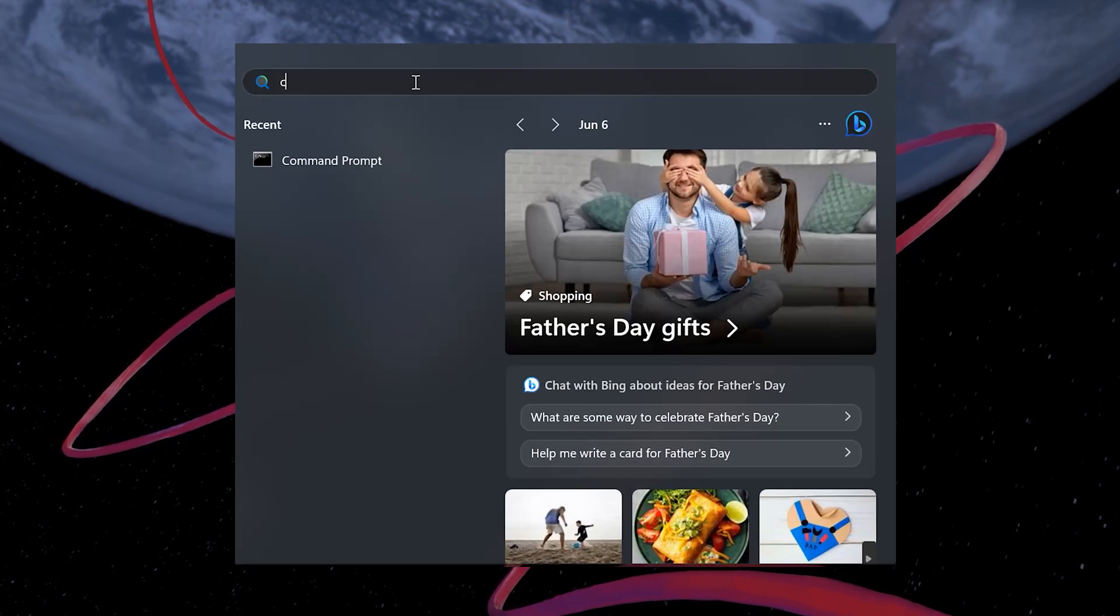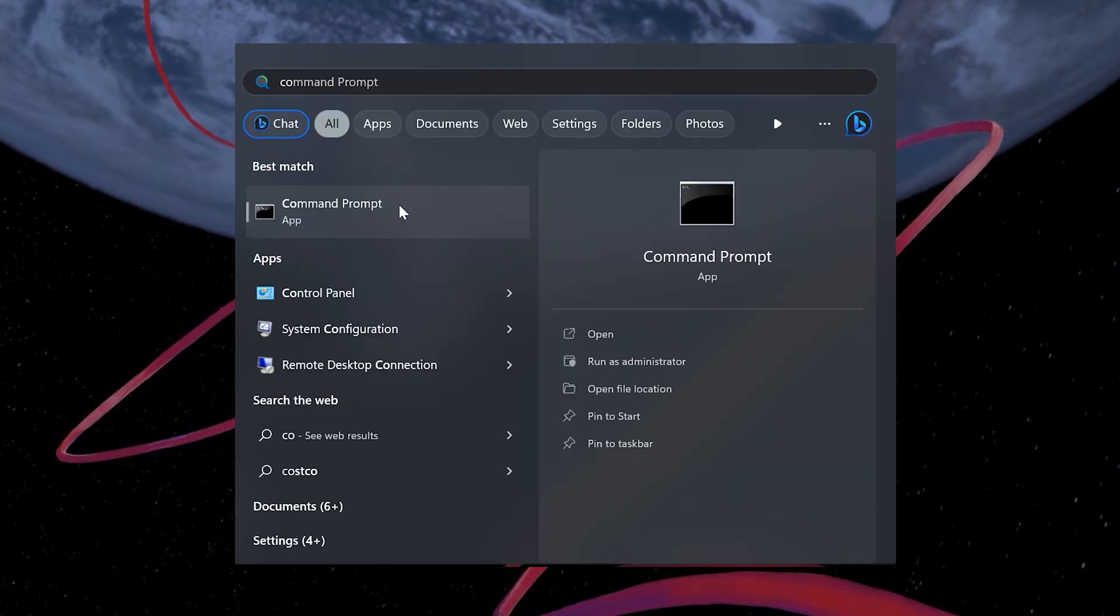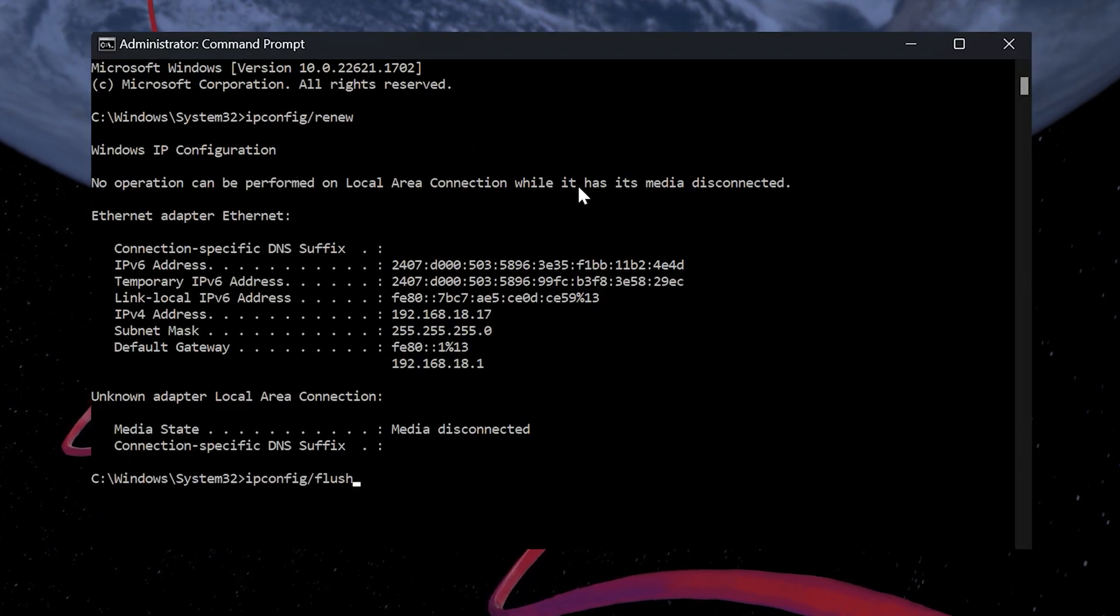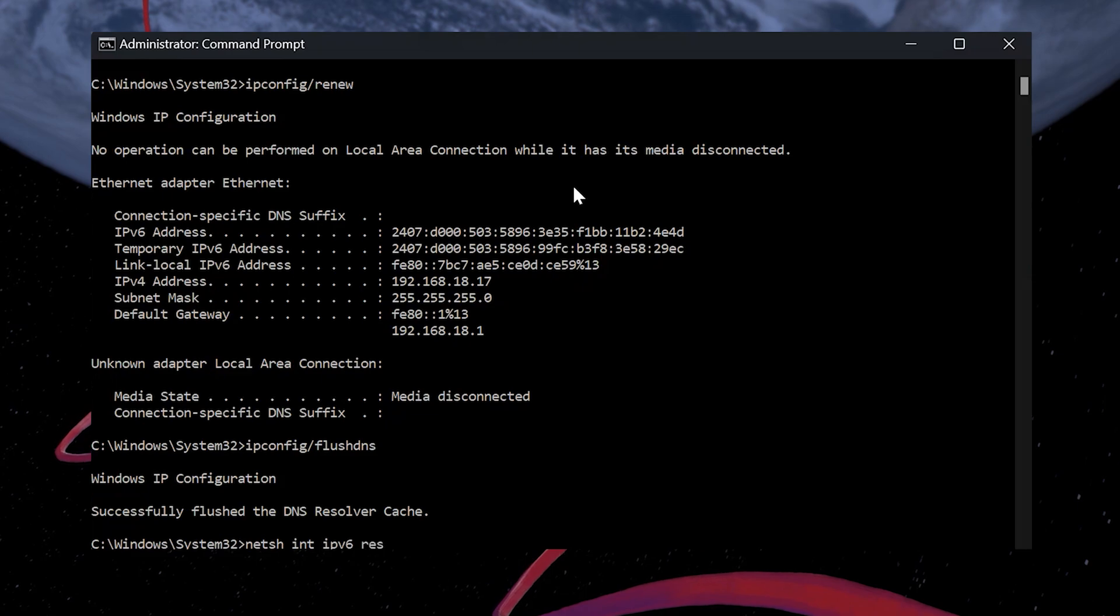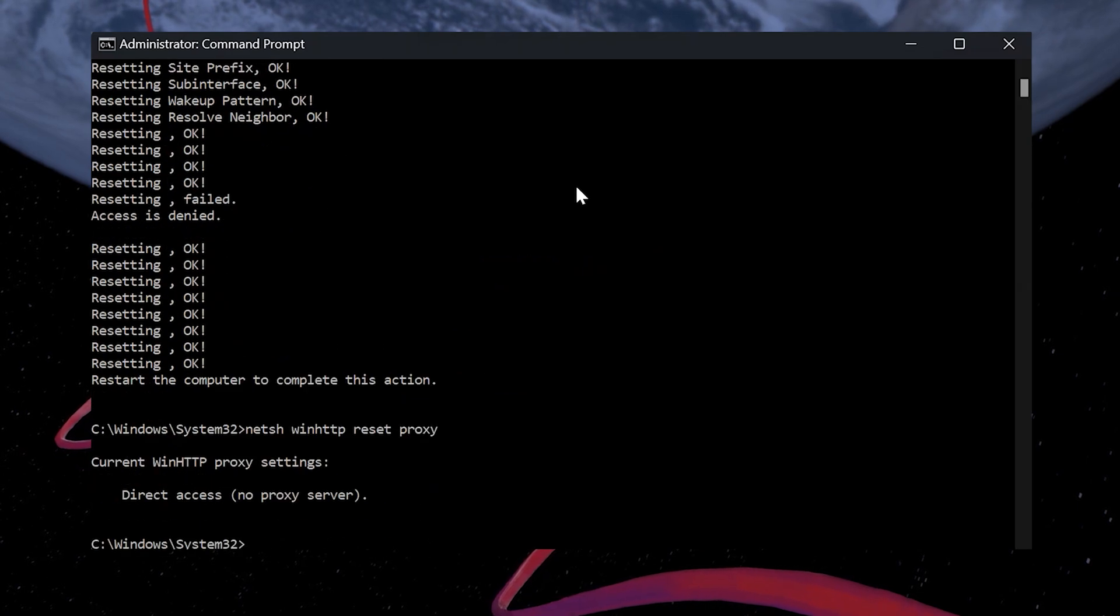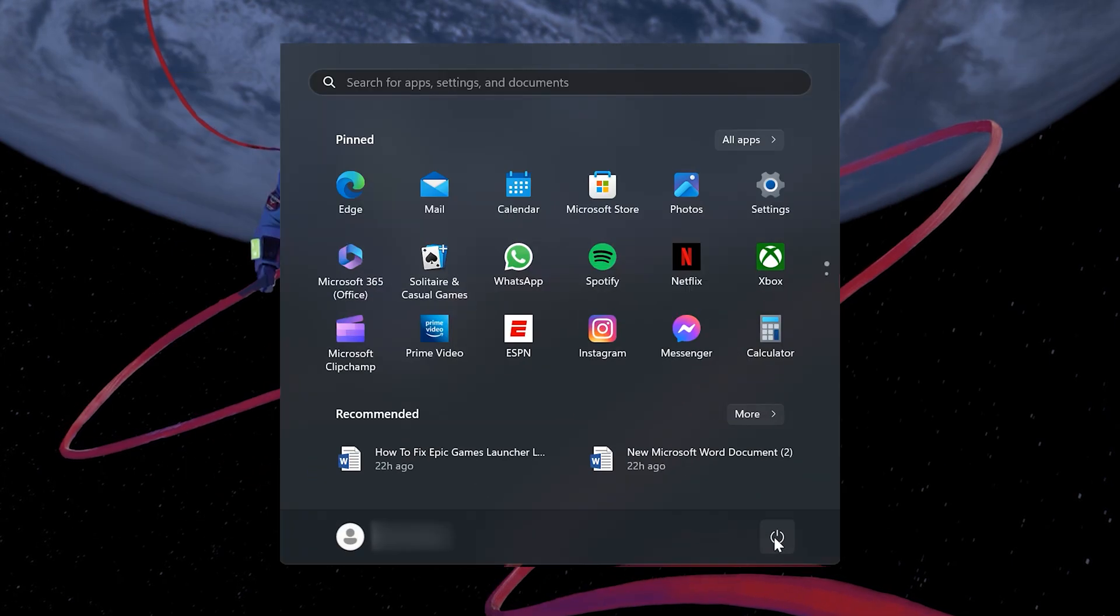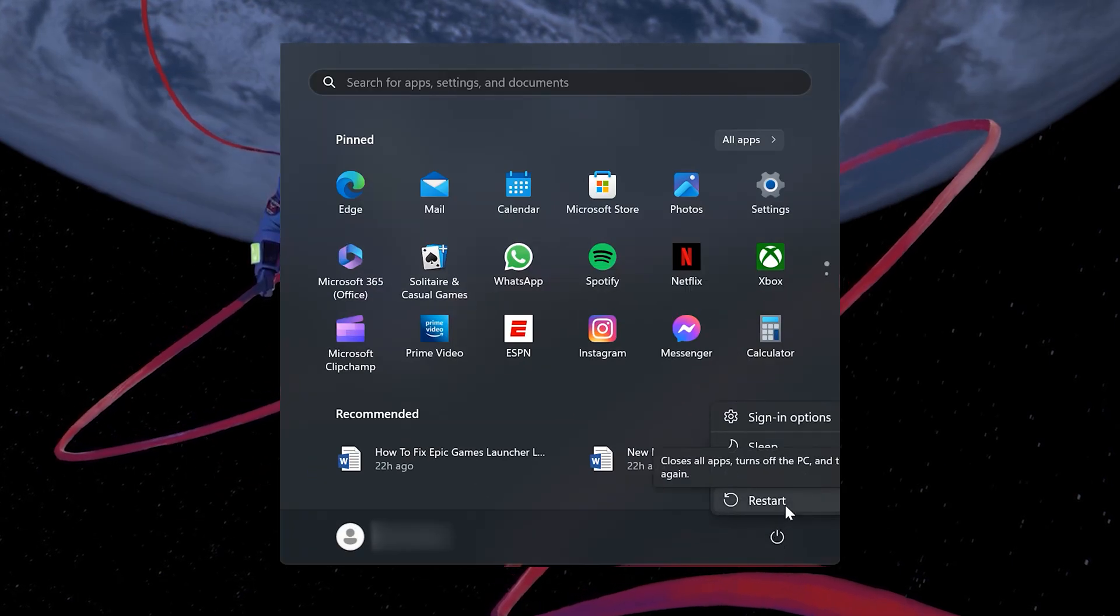Lastly, type Command Prompt in the Start Menu Search and run it as an administrator. Insert each of these commands one at a time into the Command Prompt window and hit Enter. You can find them in the video description. After entering the commands, restart your PC and the CapCut network error will be fixed.